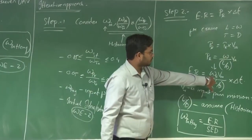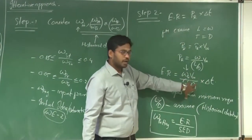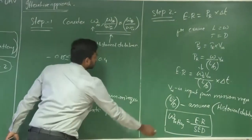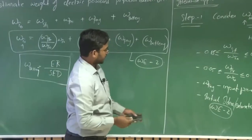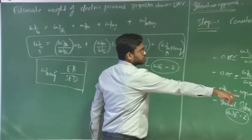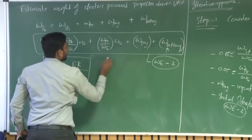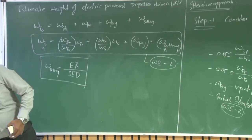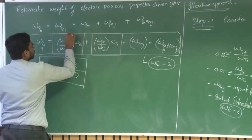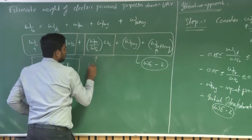We have W takeoff from the previous aircraft, and whatever battery weight you have estimated is for this particular mission, because this delta t, V infinity, and L/D correspond to the current mission requirements. Once you have this number, you go back to step 1 again, where you can estimate W battery using this equation. Now update this W battery value with the step 2 result. Try to update this battery value. Once you have updated this, keep these two parameters — structural weight ratio and propulsion weight ratio — constant during this initial iterative process.